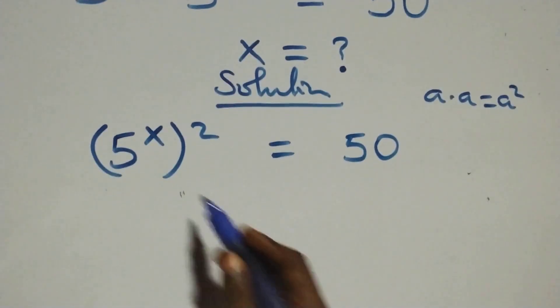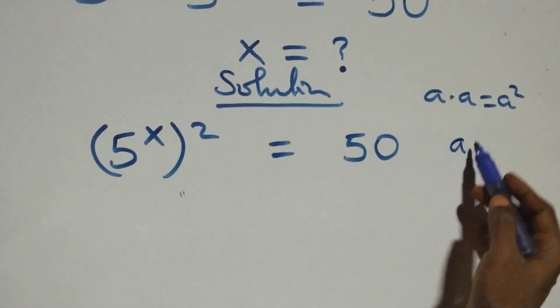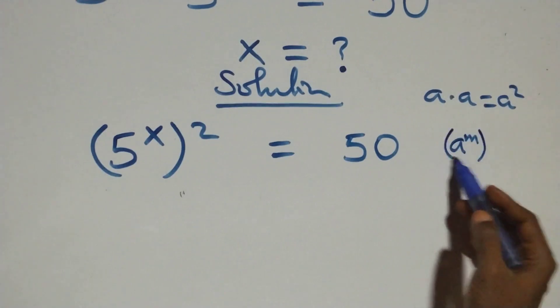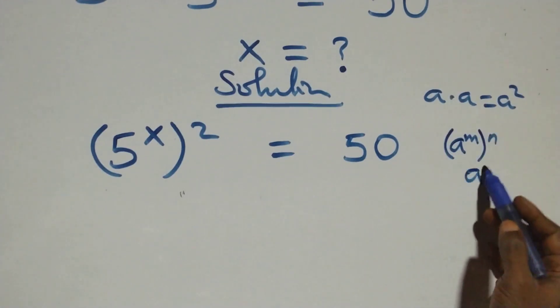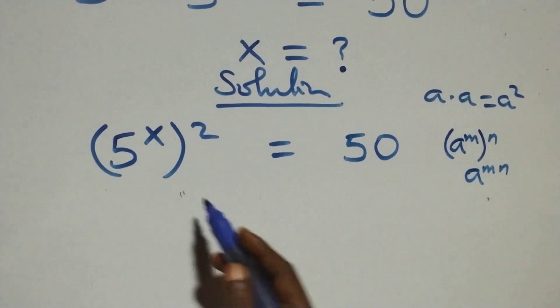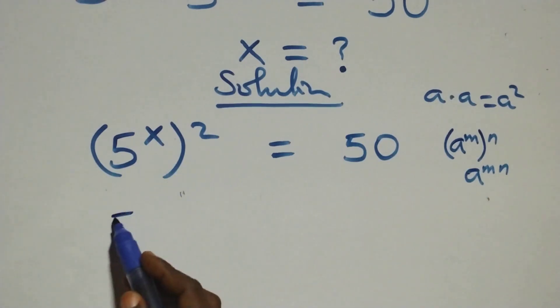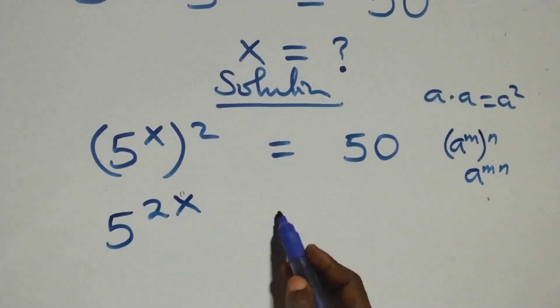Here we apply the law of indices: when we have a raised to power m, raised to power n, this is the same thing as a raised to power m times n. So this power multiplies and we have 5 raised to power 2x.